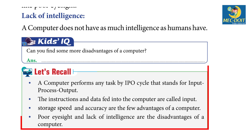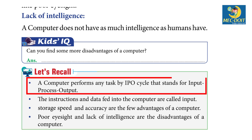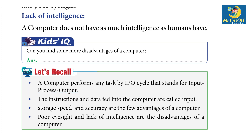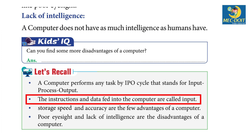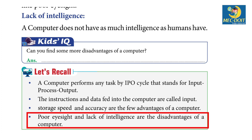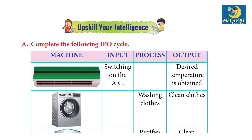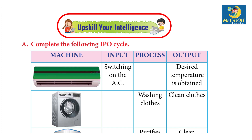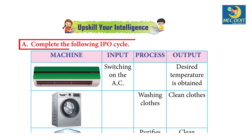Let's Recall: A computer performs any task by the IPO cycle, which stands for Input, Process, Output. The instructions or data fed into the computer are called input. Storage, speed, and accuracy are a few advantages of a computer. Poor eyesight and lack of intelligence are the disadvantages of a computer.